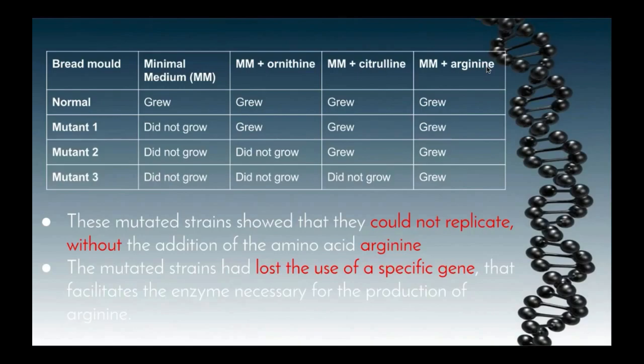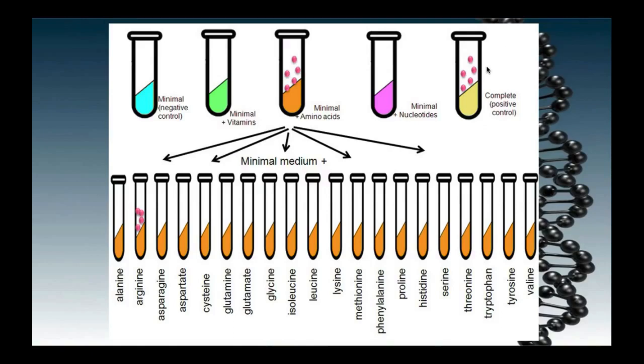This showed Beadle and Tatum that the gene that coded for the amino acid arginine was altered due to the exposure to x-rays. This image shows that the only test tube that showed any growth was the test tube that had the minimal medium plus the arginine present, tying back in with the table on the previous slide.